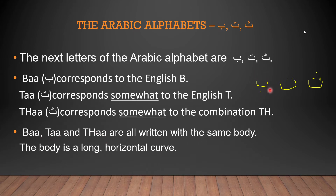Ba, Ta, and Sa are all written with the same body — just a long horizontal curve.